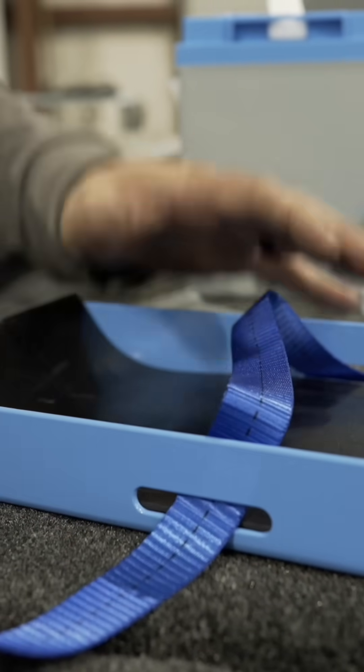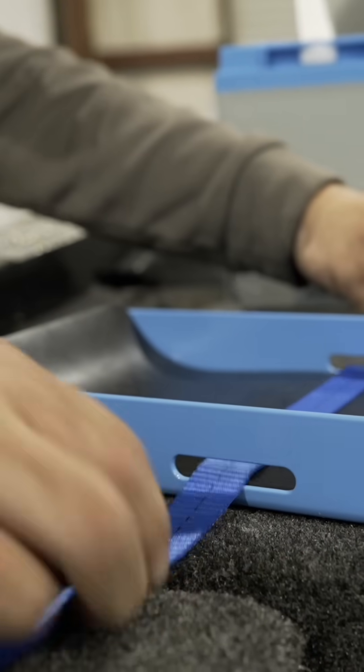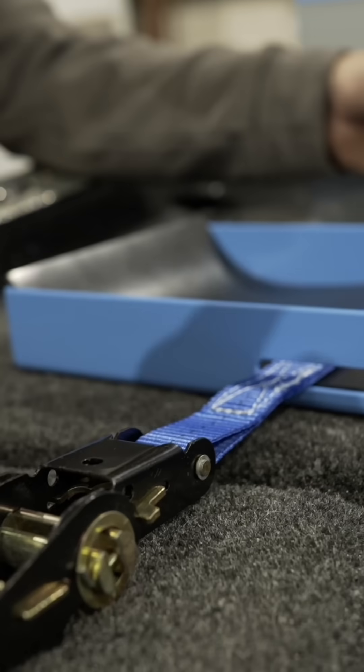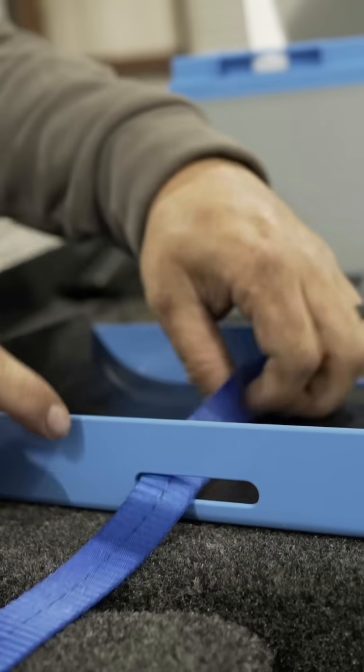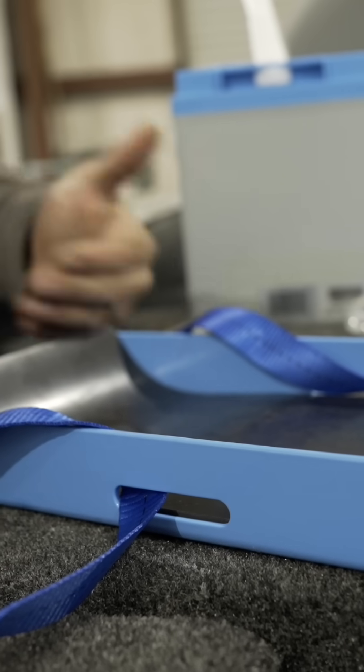So what I have found to be the easiest, while this battery tray is in the boat, is I'll run my strap through with the buckle facing up. I'm then going to grab a middle section here and I'm going to fold it over the back of the tray like so.